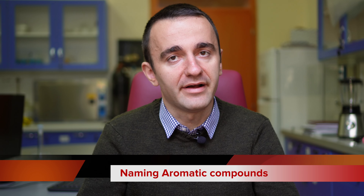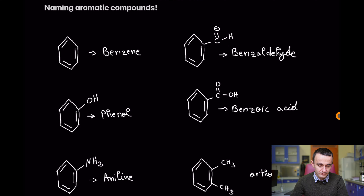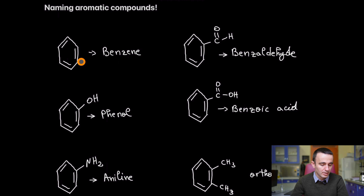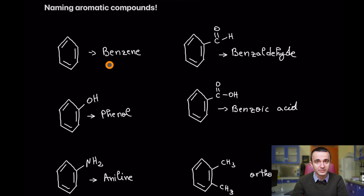Hey, welcome back. Let's continue with Organic Chemistry 2 videos. The first one is to learn how to name aromatic compounds. Here are some common compounds that have the IUPAC nomenclature, and outside of IUPAC nomenclature they are traditionally named as aromatic compounds.